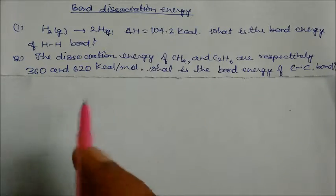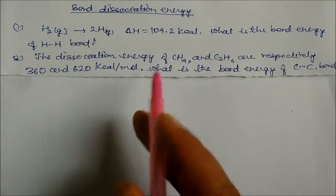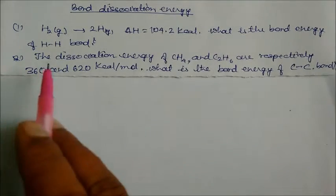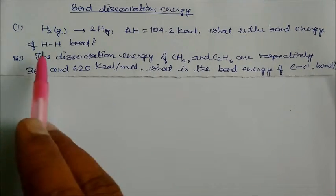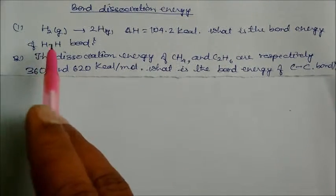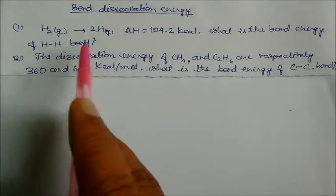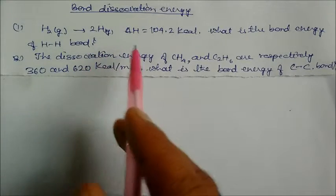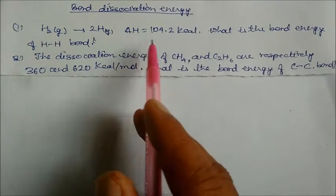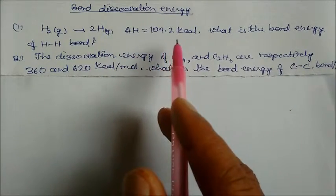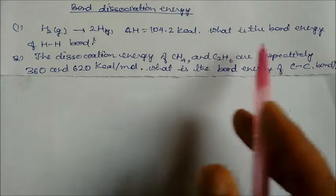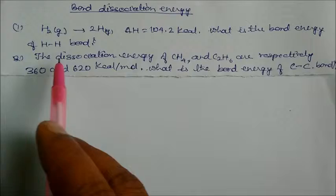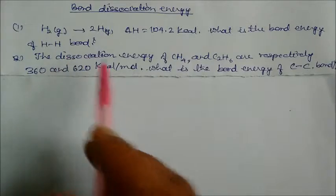We will solve some problems on bond dissociation energy. The question is: hydrogen gas gives two hydrogen atoms in gaseous state. Delta H is 104.2 kilocalorie. What is the bond energy of the H-H bond?